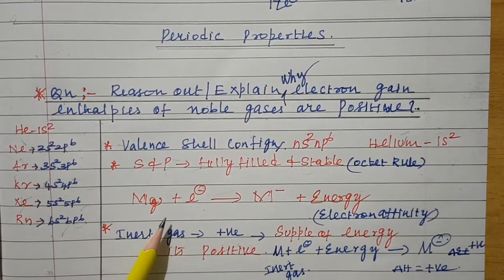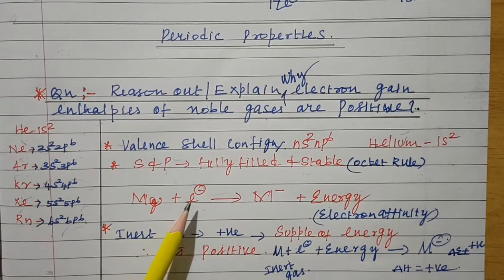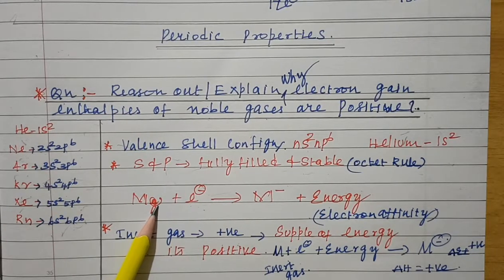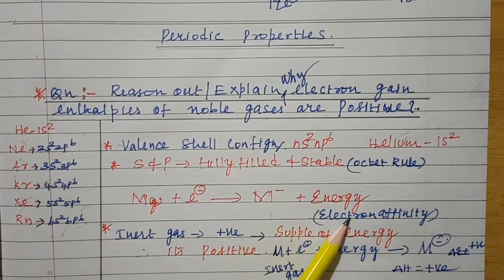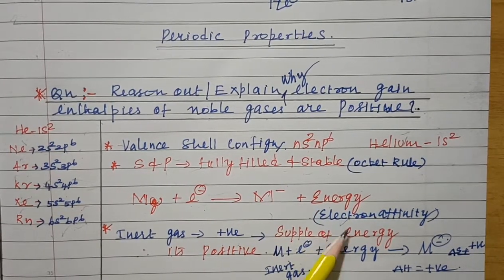What is electron gain enthalpy or electron affinity? It is the addition of electron to the neutral gaseous atom to form an anion. The energy released in the process is called electron gain enthalpy or electron affinity.